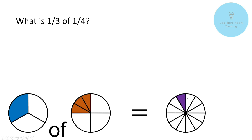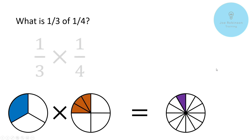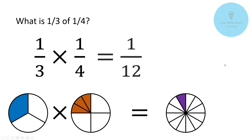So counting these up, we've got 12 equal segments — this has been split into twelfths. So what you can see now is that one third of one quarter is one twelfth. And actually, going back to what we said at the start, saying what is one third of one quarter is exactly the same as saying what is one third times one quarter — we end up with one twelfth. So laid out mathematically, that would look like this: one third times one quarter is equal to one twelfth. Nice and simple so far.